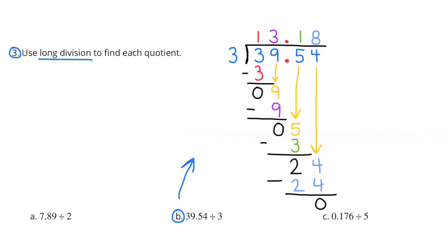Part B: 39 and 54 hundredths divided by 3. 3 goes into 3 once, so I put the 1 in the tens place right above the 3. 1 times 3 is 3, and the difference is 0. I bring down the 9 in the ones column. 3 goes into 9 three times, so I put the 3 in the ones column above the 9. 3 times 3 is 9, and the difference is 0. I make sure I put my decimal point.